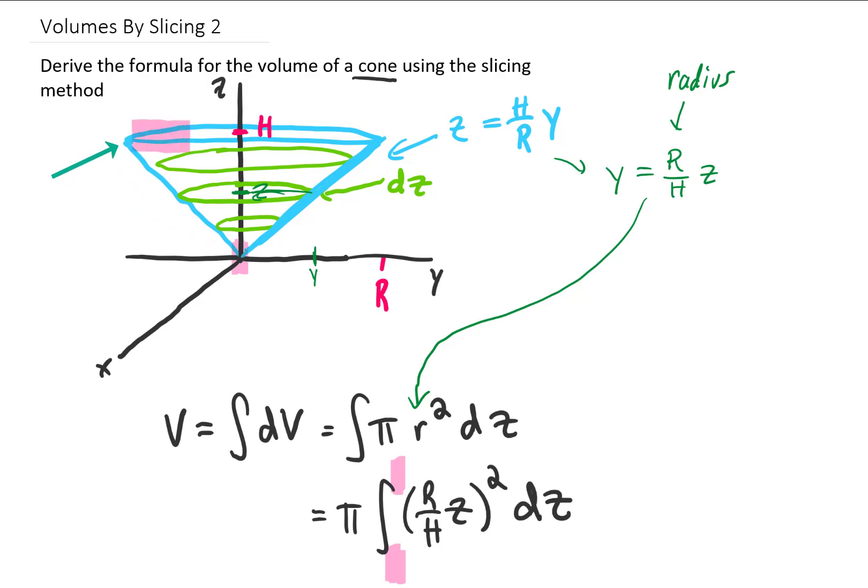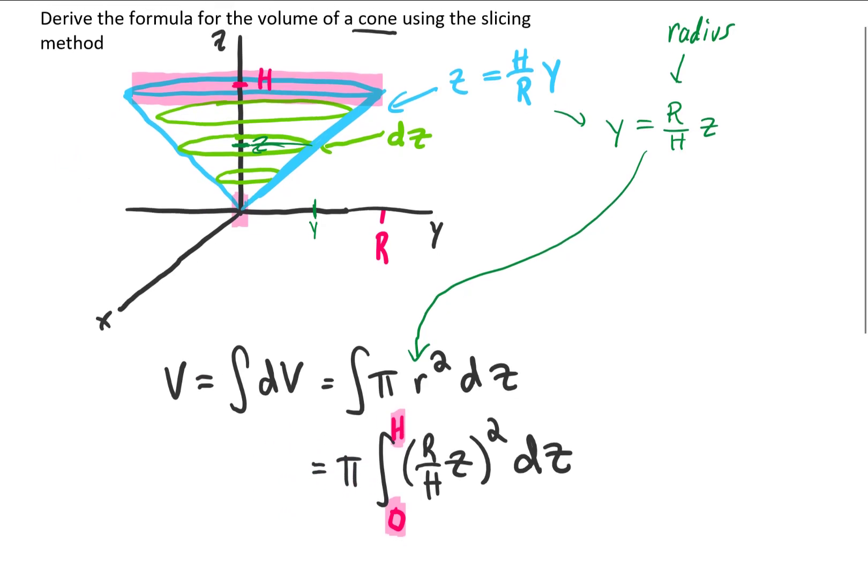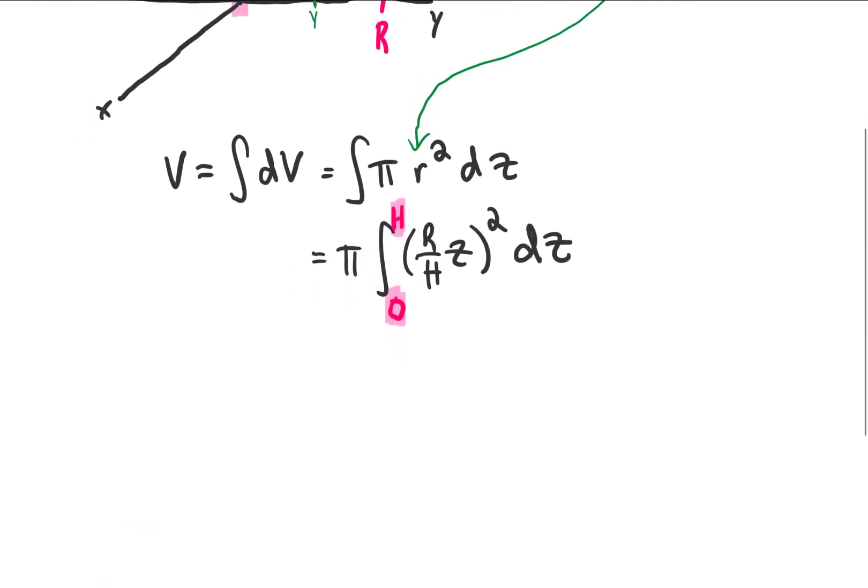And the largest value of z would be right up here at capital H. So we're going to integrate from 0 to capital H. And when we complete this integral, we should have ourselves the volume of a cone.